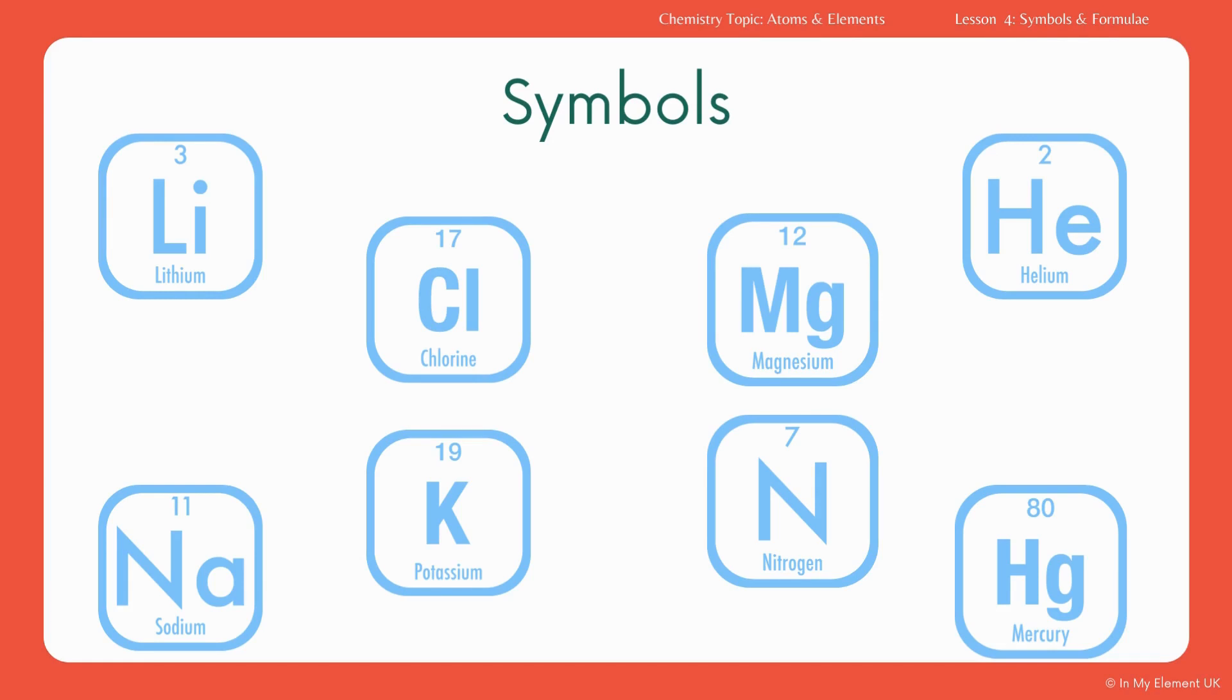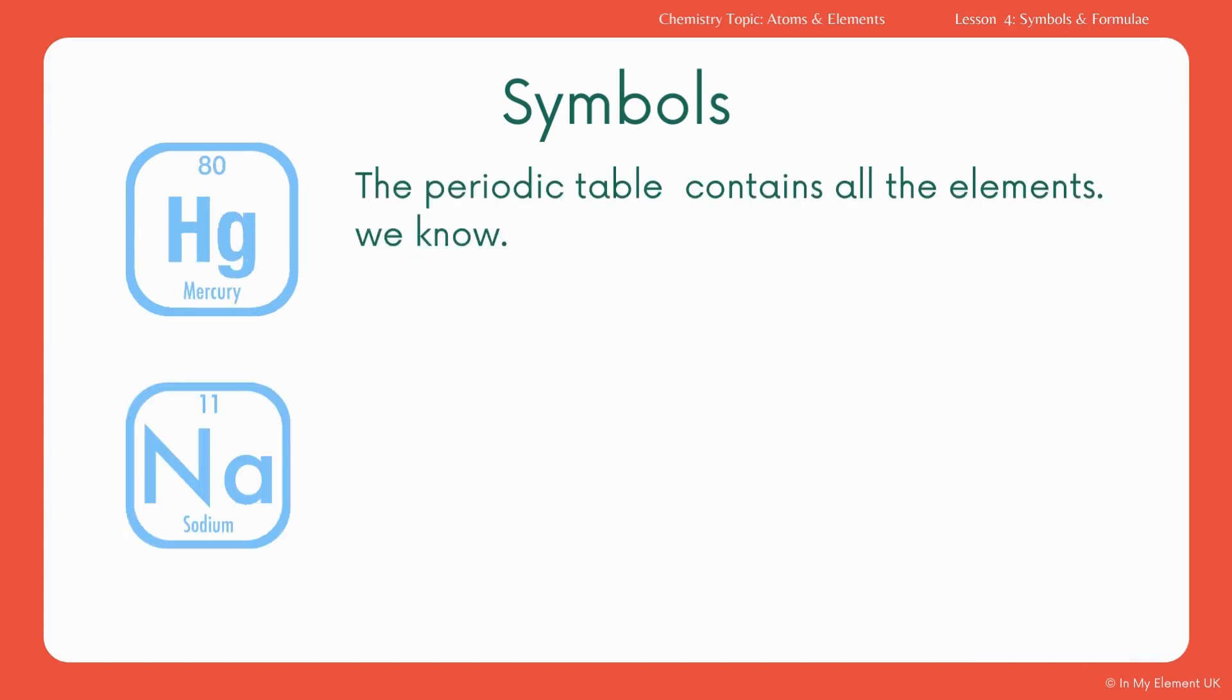So you've got eight symbols there, and they're all found in the periodic table. The periodic table contains all the elements we know. Two symbols there, mercury and sodium.